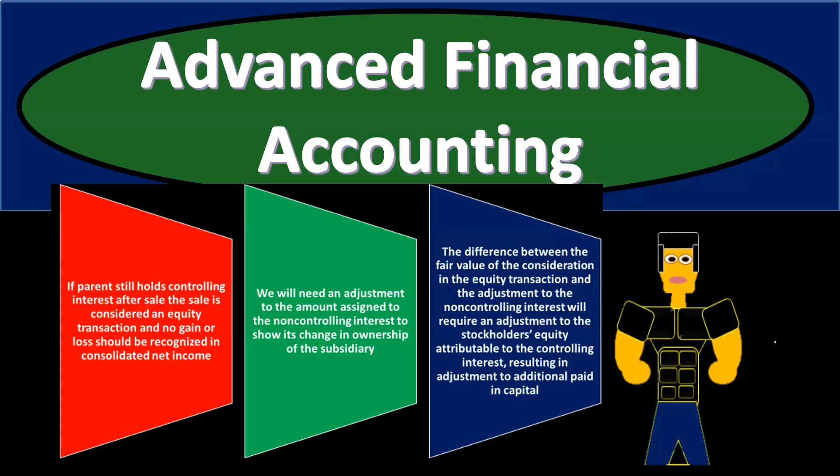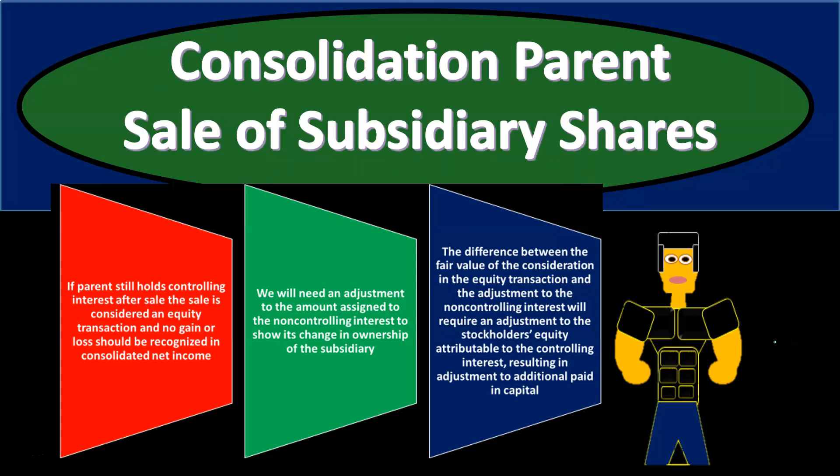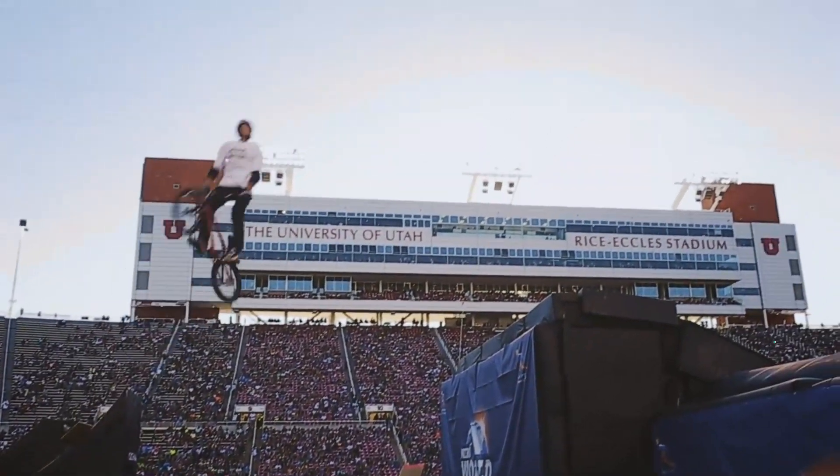Advanced financial accounting PowerPoint presentation. In this presentation we will discuss a situation where we have a consolidation process, and in the period of consolidation the parent sells subsidiary shares to a non-affiliated entity. We have a parent-subsidiary relationship, with the parent owning a controlling interest — over 51 percent of the subsidiary — and then selling some of those shares to an unaffiliated party. What will be the effect in the consolidation process of that?